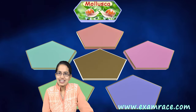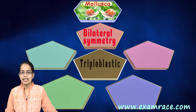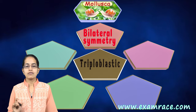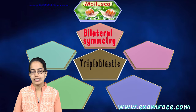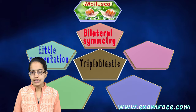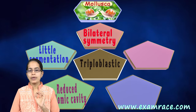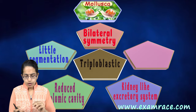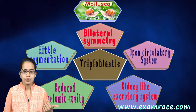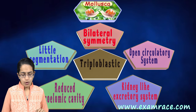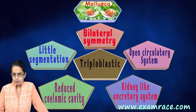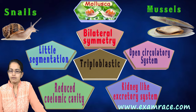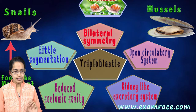Mollusca are also triploblastic and bilaterally symmetrical. There is very little segmentation, a reduced coelomic cavity, and kidney-like structures mainly used for excretion. Mollusca also have an open circulatory system. Snails and mussels are good examples, and they have foot-like structures for movement.